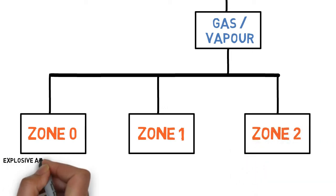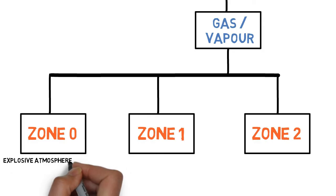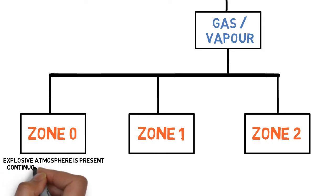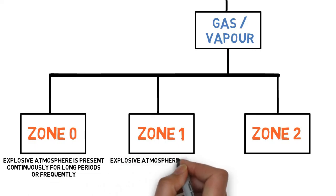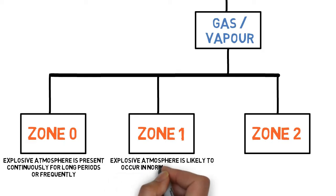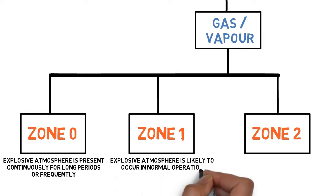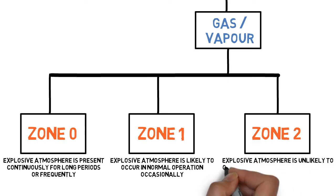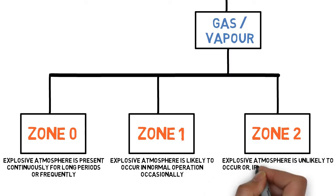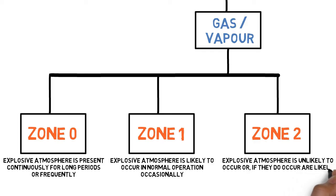In Zone 0, Explosive Atmosphere is present continuously for long periods, or frequently. In Zone 1, Explosive Atmosphere is likely to occur in normal operation occasionally. In Zone 2, Explosive Atmosphere is unlikely to occur, or if they do occur, are likely to do so for a short period only.